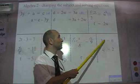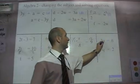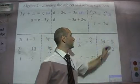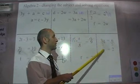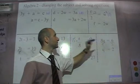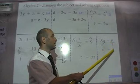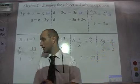Here, 3 times Q is 6. If I divide this side by 3, and I divide this side by 3, 3 divided by 3 is 1. The 3s cancel. 6 divided by 3 is 2. So let's look at a little bit more complicated ones now.